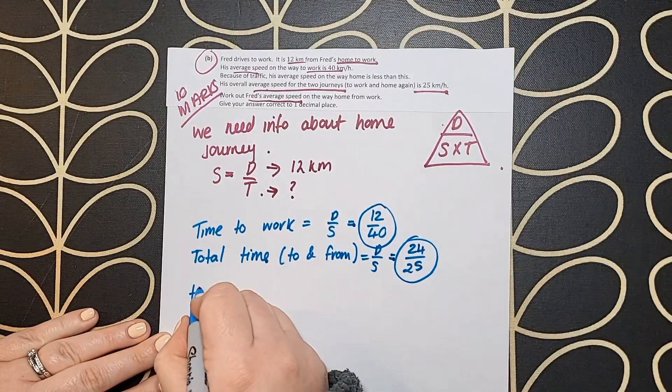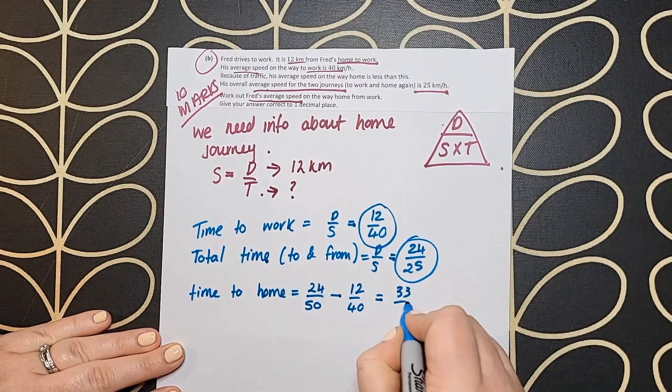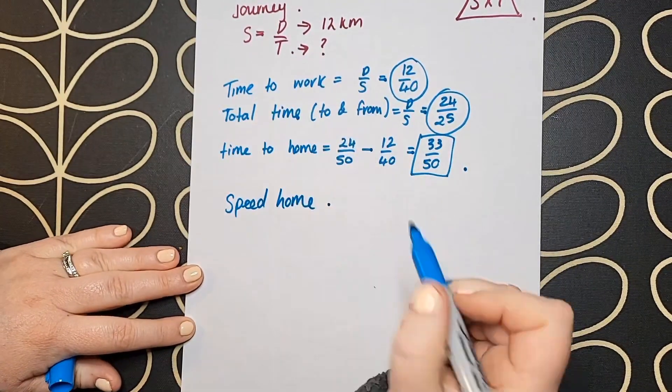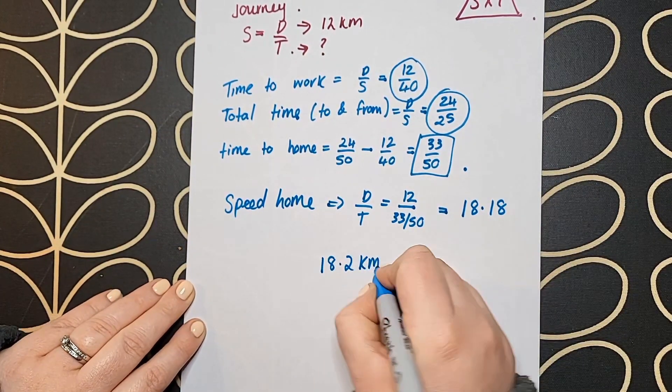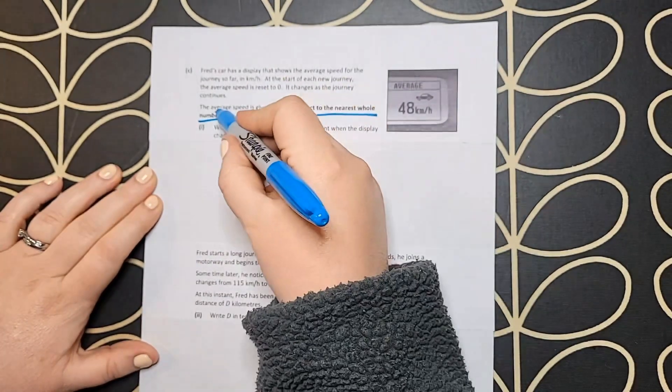Looking at the information given, I know his time to work and the overall time. When I subtract them from each other, I can figure out his time to come home. I calculate it using 12 over 33/50 and get 18.2 kilometers per hour.